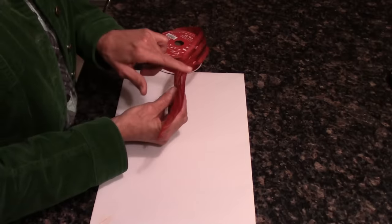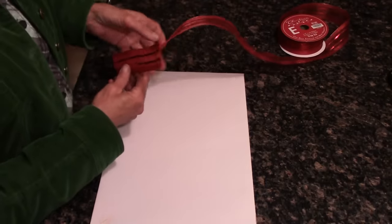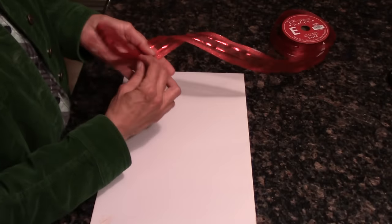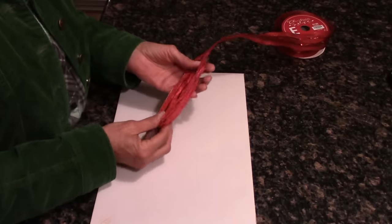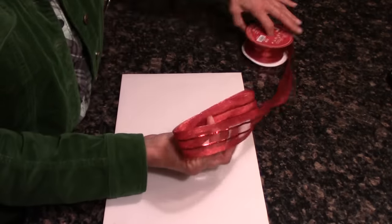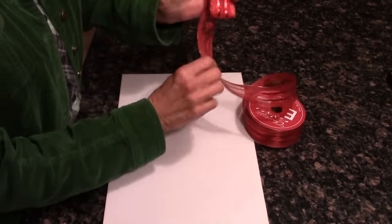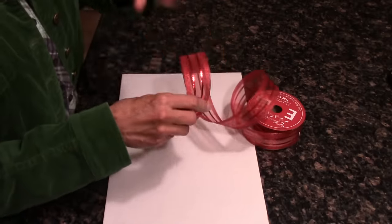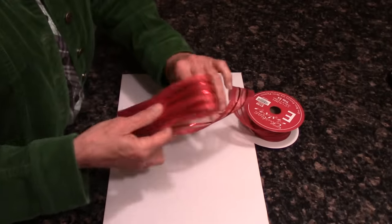From there I just simply fold it. That's two loops. And on this being a one and a half, I'm going to do six loops. So that's two, three, four, five, six.